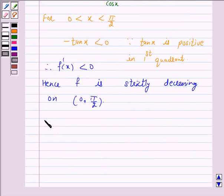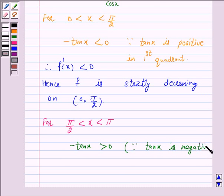Now, for π/2 < x < π, tan x is negative in the second quadrant. Hence, -tan x is positive because tan x is negative in the second quadrant.